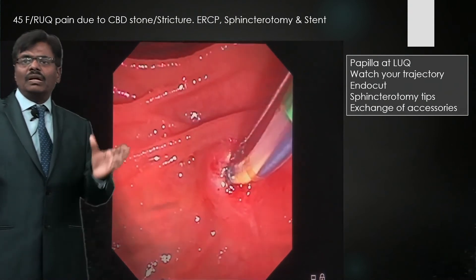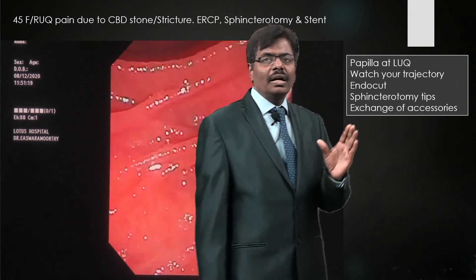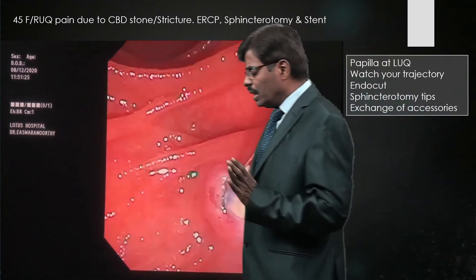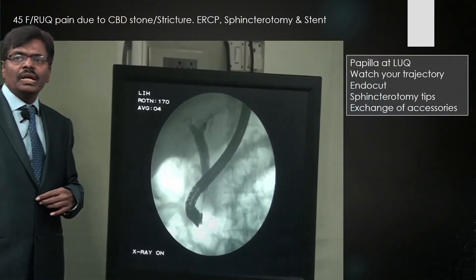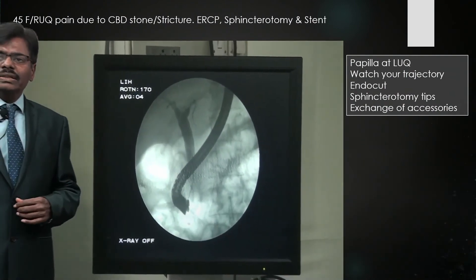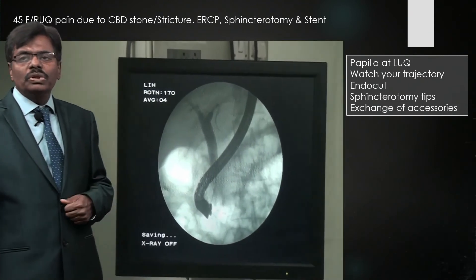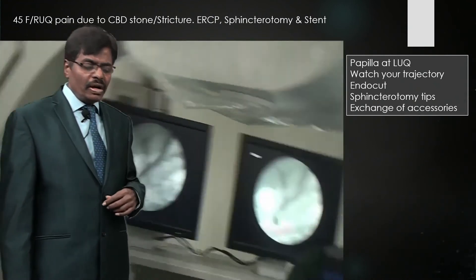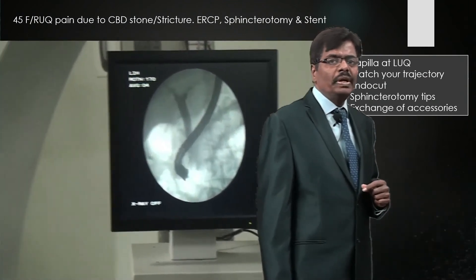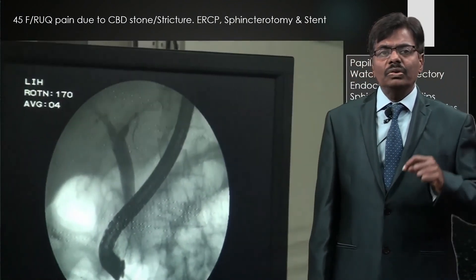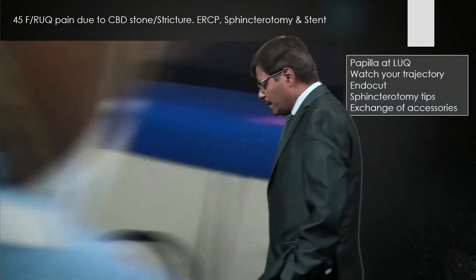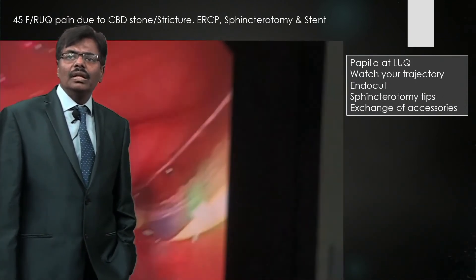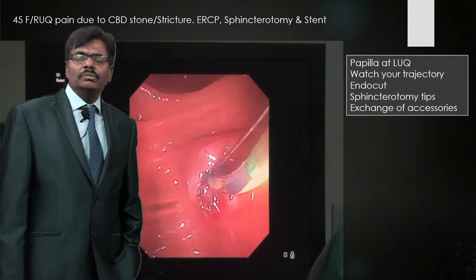The endocut must be done millimeter at a time — always check as you go. That way there is no zipper or uncontrolled cut — only a clean, controlled cut with hemostasis. Without endocut capability, I would not recommend performing ERCP safely. This is a fairly dilated duct — as dilated as the scope, so approximately 10.2 mm — suggesting a short stricture at the lower end. We need to determine whether it is a stricture or sludge, so we perform a balloon sweep.